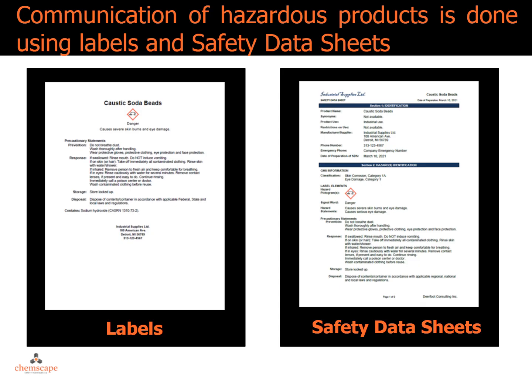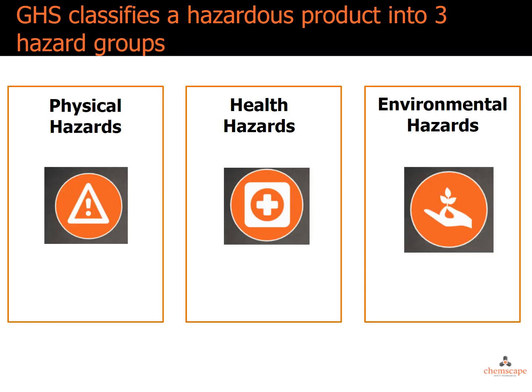Communication of hazardous products is done using labels and safety data sheets. GHS provides standards for the information that is required to be on labels and SDSs.